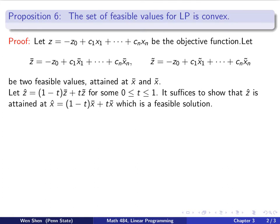Now we make a convex combination of the two feasible values z-bar and z-tilde — we call it z-hat, where t is between 0 and 1. By the definition, it suffices to show that z-hat is in the feasible value set, which means z-hat is attained at some x-hat which is feasible. Here we specify that x-hat is actually a convex combination of x-bar and x-tilde. The rest of the proof is aimed at proving this statement.